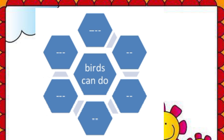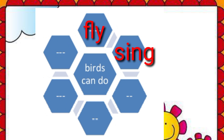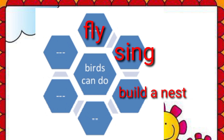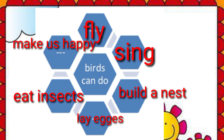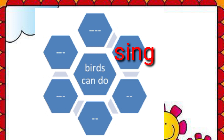Next activity: complete the mind map. Birds can do — Birds can fly, birds can sing, birds can build a nest, birds can lay eggs, birds can eat insects, birds can make us happy.